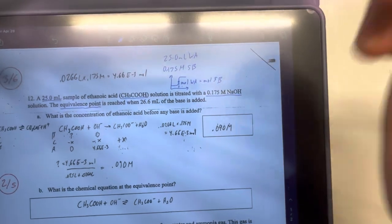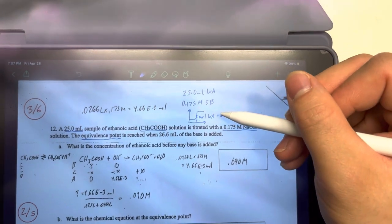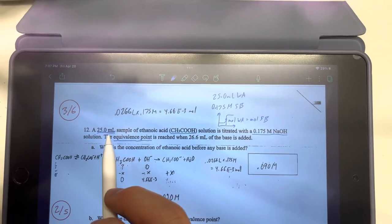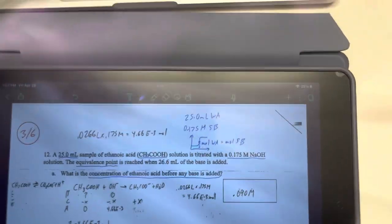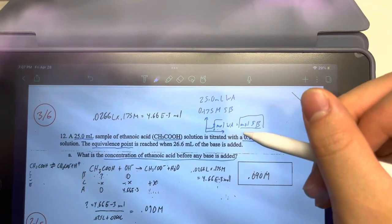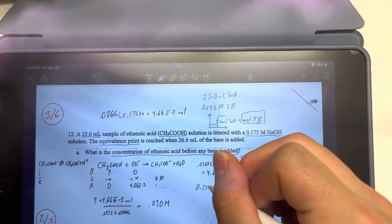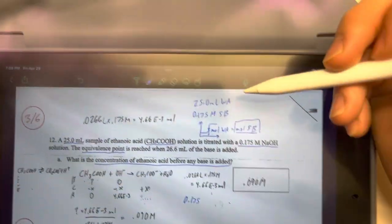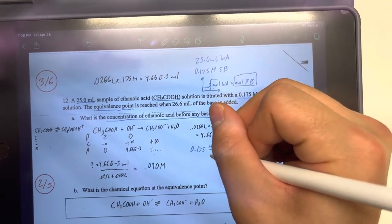So by solving for the number of moles of strong base, we are also solving for the moles of weak acid. And once we have that, we should be able to divide it by the original volume of 25 milliliters to get our concentration of the ethanoic acid before any base is added. So in order to solve for the moles of strong base here, let's work with what we have. We have the concentration, 0.175. And what is molars? How do we convert that into liters so that we are able to multiply it by milliliters?